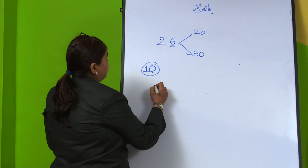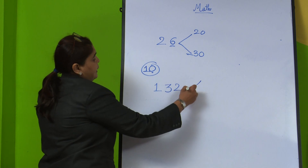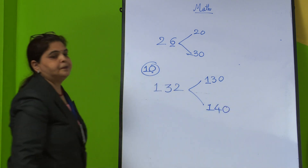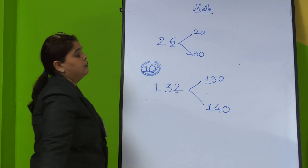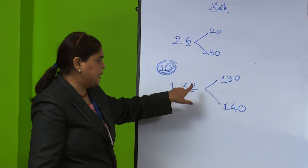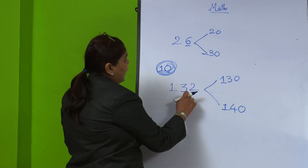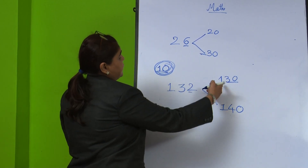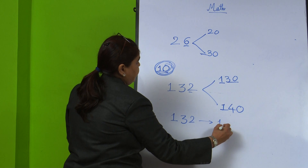One more example: 132. This number lies between 130 and 140. When rounding to the nearest 10, we look at 1 digit — the units digit, which is 2. Is 2 less than 5? Yes. If the digit is less than 5, the number rounds down. So the nearest number to 132 is 130.